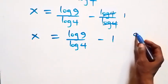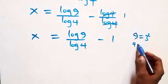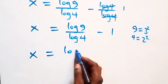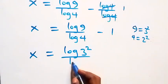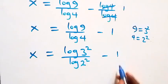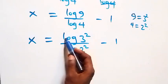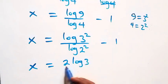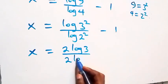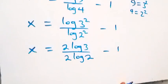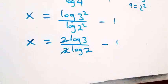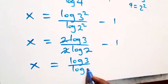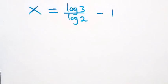Let's express 9 as 3 times 3, which is 3 squared, and also 4 as 2 times 2, which is 2 squared. So we have x equals log(3²) over log(2²) minus 1. Applying the power law of logarithms, the exponents come down: x equals 2 log 3 over 2 log 2 minus 1. The 2s cancel each other, leaving x equals log 3 over log 2 minus 1.